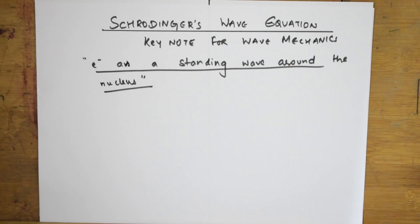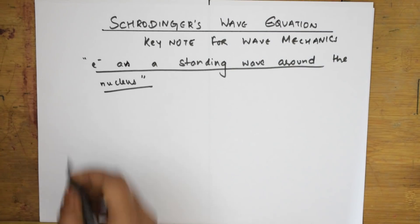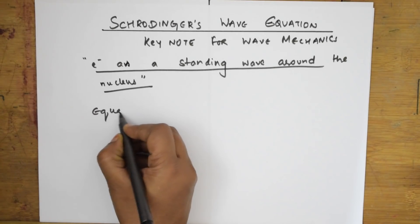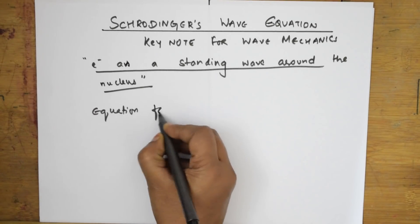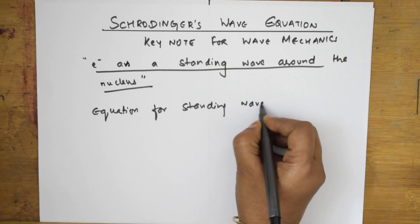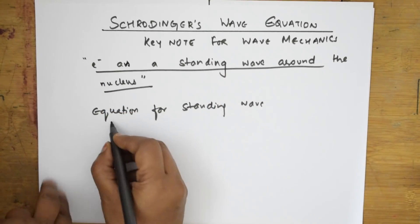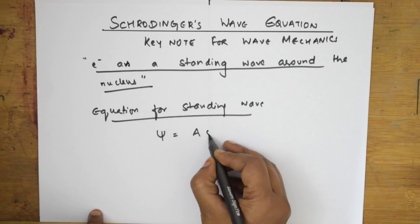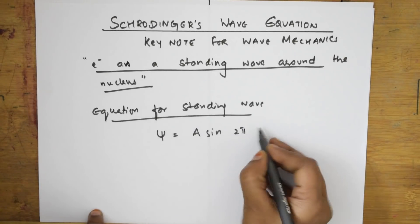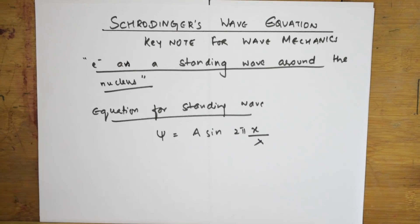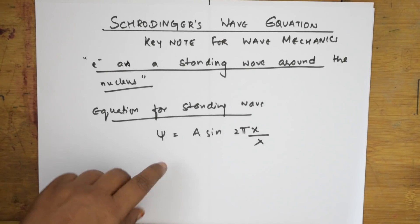So based on the standing wave around the nucleus, the derivation will be according to that. For a standing wave, the equation already derived is: ψ = A sin(2πx/λ). Nothing is being derived here from scratch — I'm just showing you this for the first step, then we'll go gradually into the derivation.